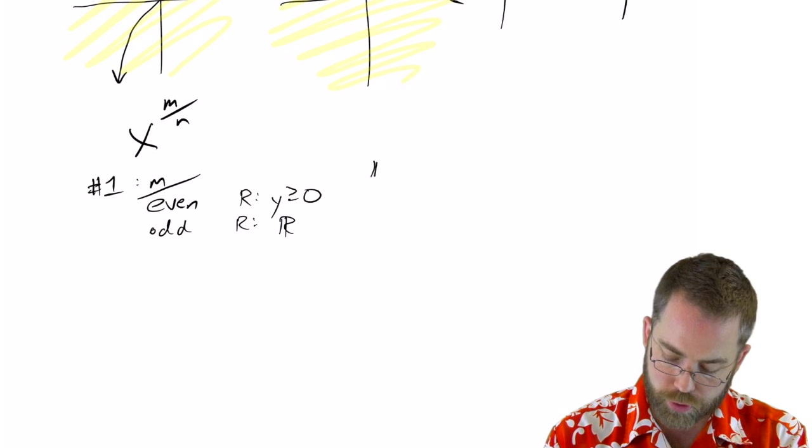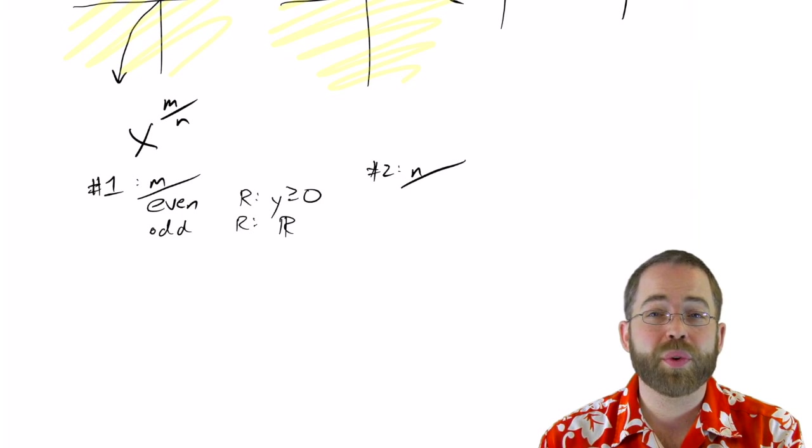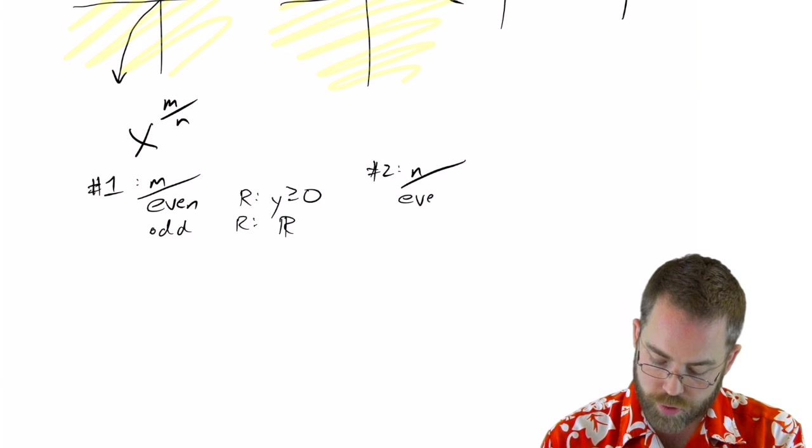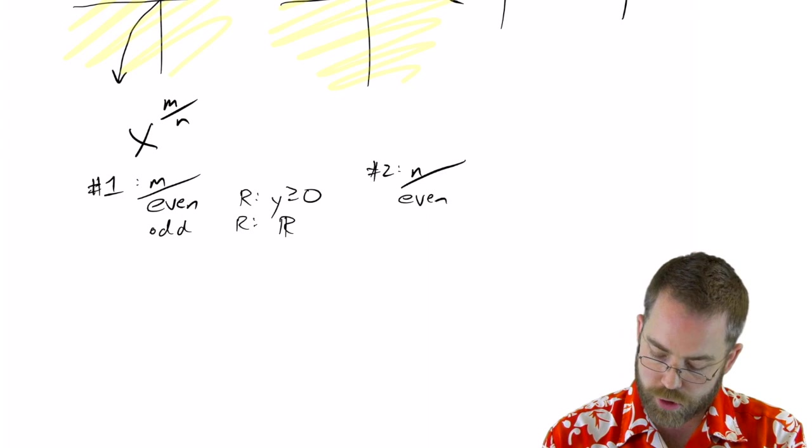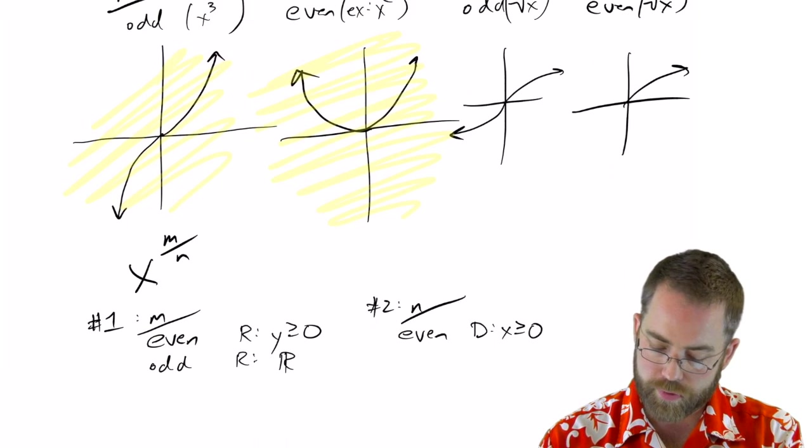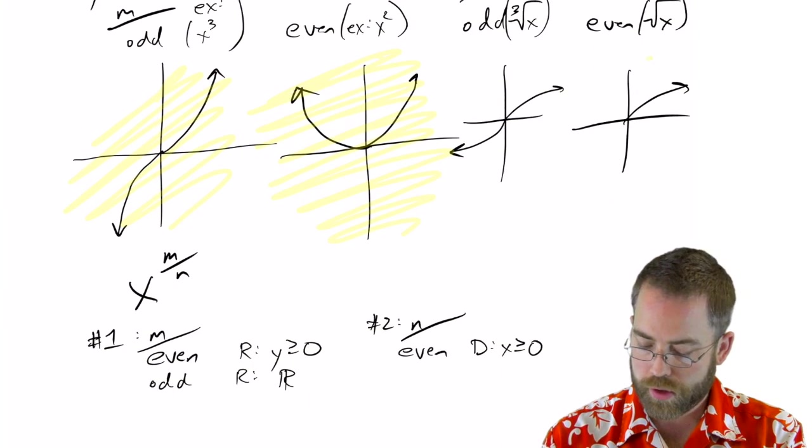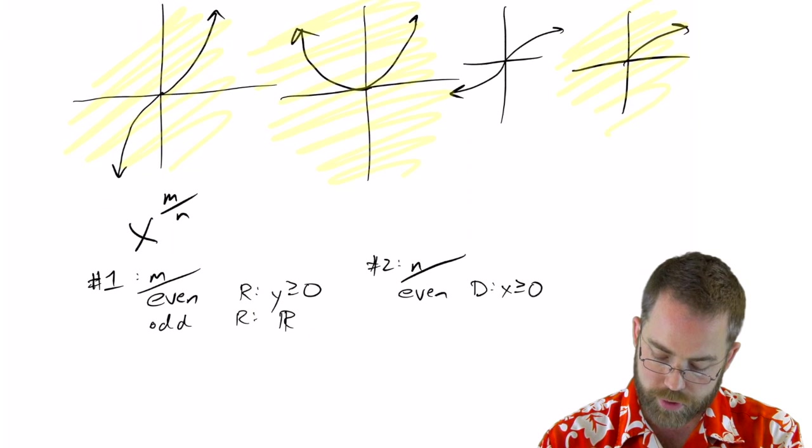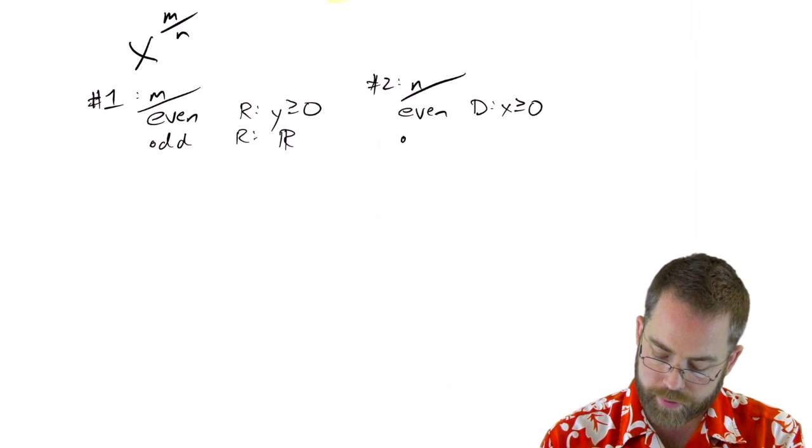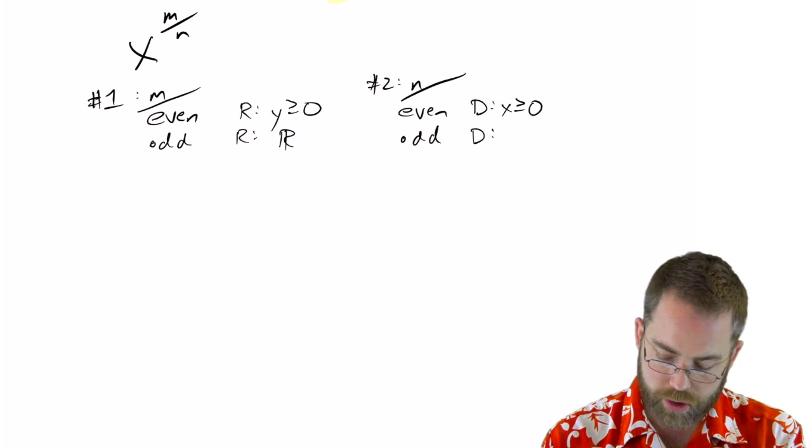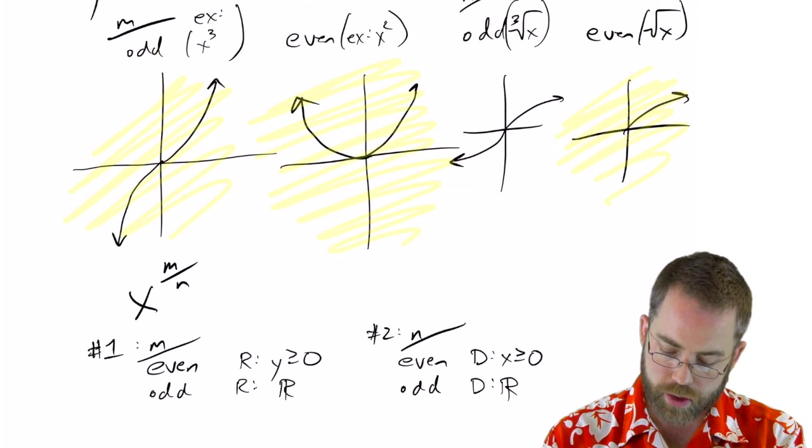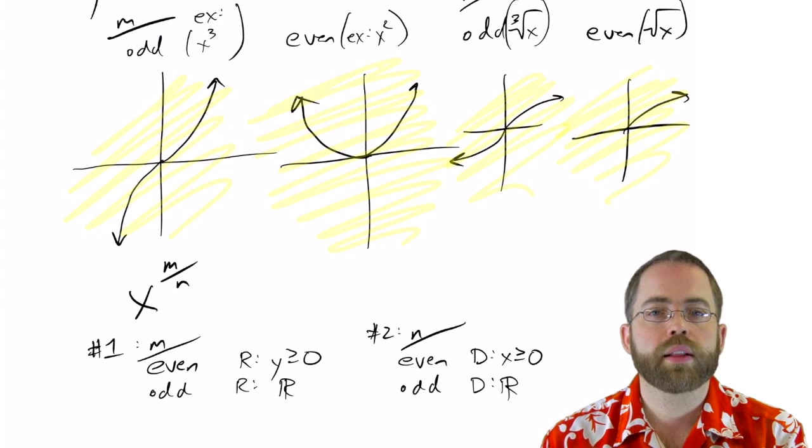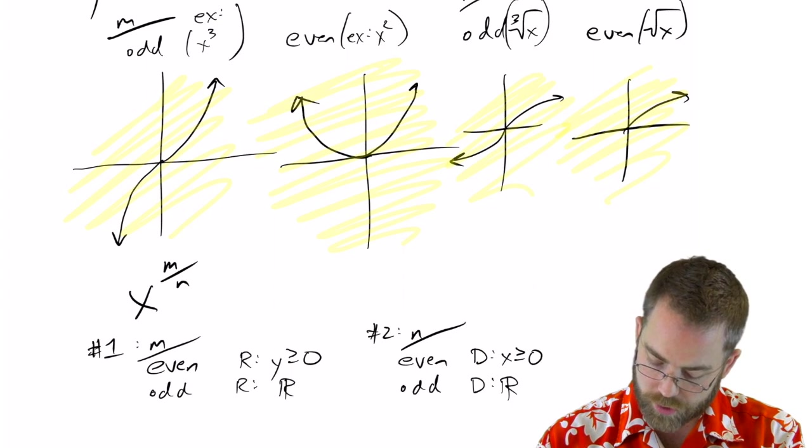Thing number two to consider—thing number two is n, this root business. So if we have an even root, then your domain is only positive numbers and zero. So that if you have an even root, you can't take an even root of a negative number over the real numbers. So that's going to restrict you that way. Versus if you have an odd root, then your domain can still be all real numbers, that you can have left and right possible.